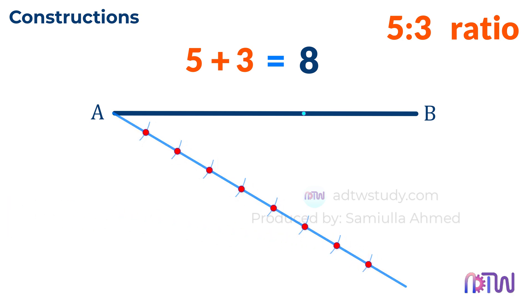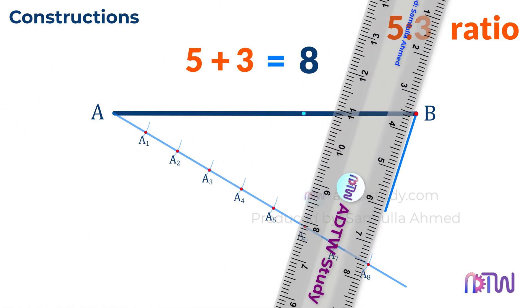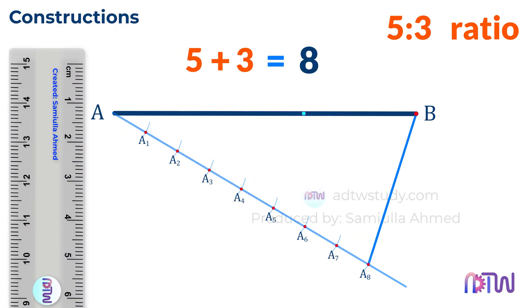Label these points as A1, A2, and so on up to A8. Next, join A8 with the endpoint B of the original line. Now since we need the 5 to 3 ratio, draw a line from A5 that is parallel to the line A8B. When we do this, we get the exact point that divides the original line into the 5 to 3 ratio. Surprising, right?